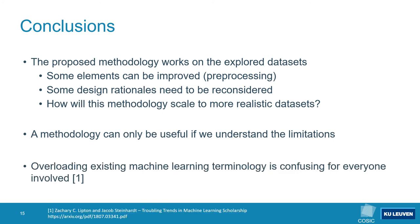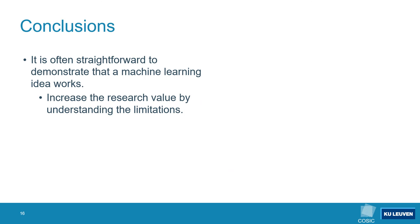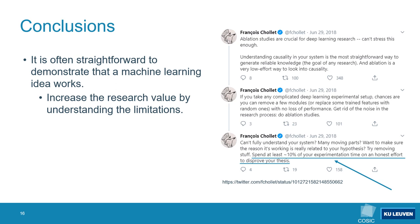When writing a machine learning paper, or any other paper, it is important to not confuse your reader. Overloading definitions for terminology that is already widely established is confusing. The paper titled "Troubling Trends in Machine Learning Scholarship" by Lipton and Steinhardt covers commonly made mistakes that we should all try to avoid. Similarly, many machine learning papers contain experiments that try to demonstrate that some novel idea works, but those same papers rarely contain experiments that try to disprove their own hypothesis. We believe it is valuable to not only highlight how great your new idea is, but to also demonstrate what the limitations are. According to François Chollet, the creator of Keras — the machine learning framework used in the vast majority of machine learning papers in the field of side-channel analysis — you should spend at least 10% of your experimentation time on an honest effort to disprove your own thesis.